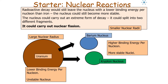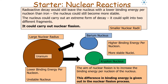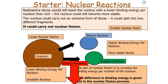Nuclear fission is when a large nucleus with a large nuclear radius splits into two smaller nuclei, which are more stable because they have a smaller nuclear radius and a higher binding energy per nucleon. The aim of nuclear fission is to increase the binding energy per nucleon, and the difference in binding energy is given out in the process, so energy is released.